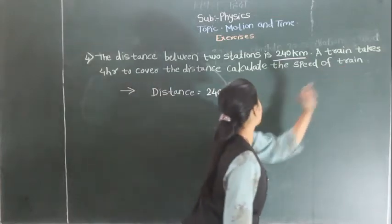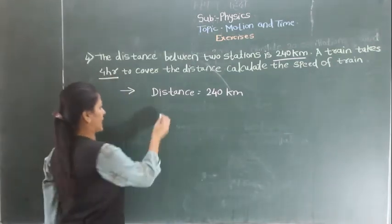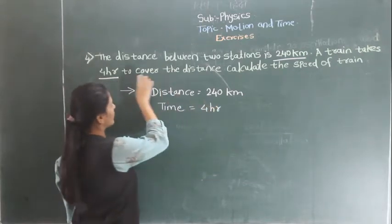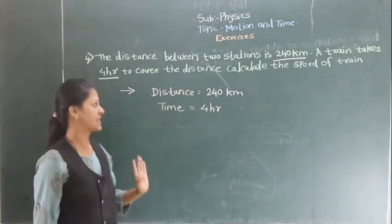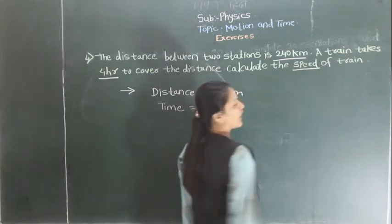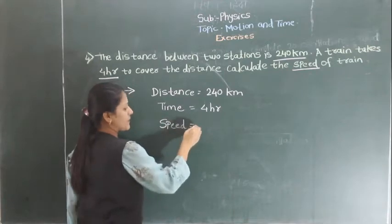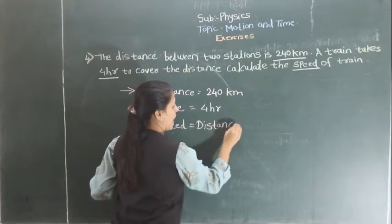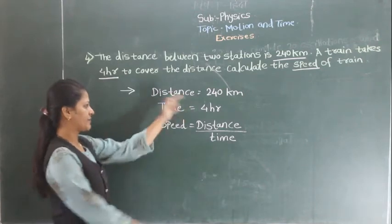Then a train takes 4 hours — this is time. So it takes 4 hours to cover the distance. It takes 4 hours. So calculate the speed of the train. What do you have to find? You have to find the speed. Now what is the formula for the speed?